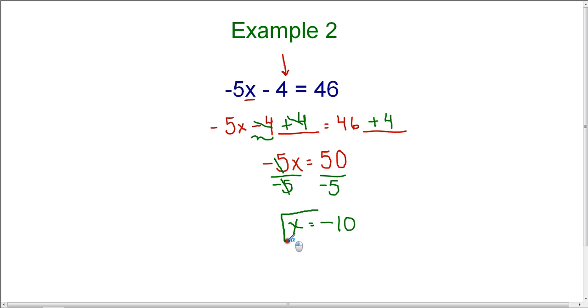So I end up with an answer of x equals negative 10. And therefore, in two different steps, I was able to get the variable x by itself and solve the equation.